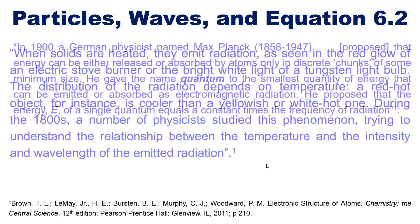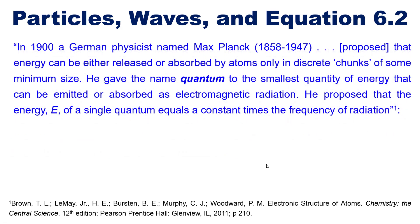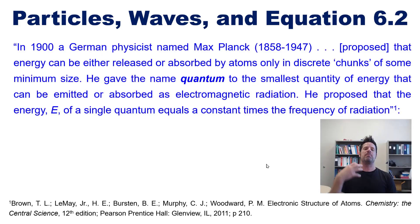In 1900 a German physicist named Max Planck proposed that energy can be either released or absorbed by atoms only in discrete chunks of some minimum size. He gave the name quantum to the smallest quantity of energy that can be emitted or absorbed as electromagnetic radiation.